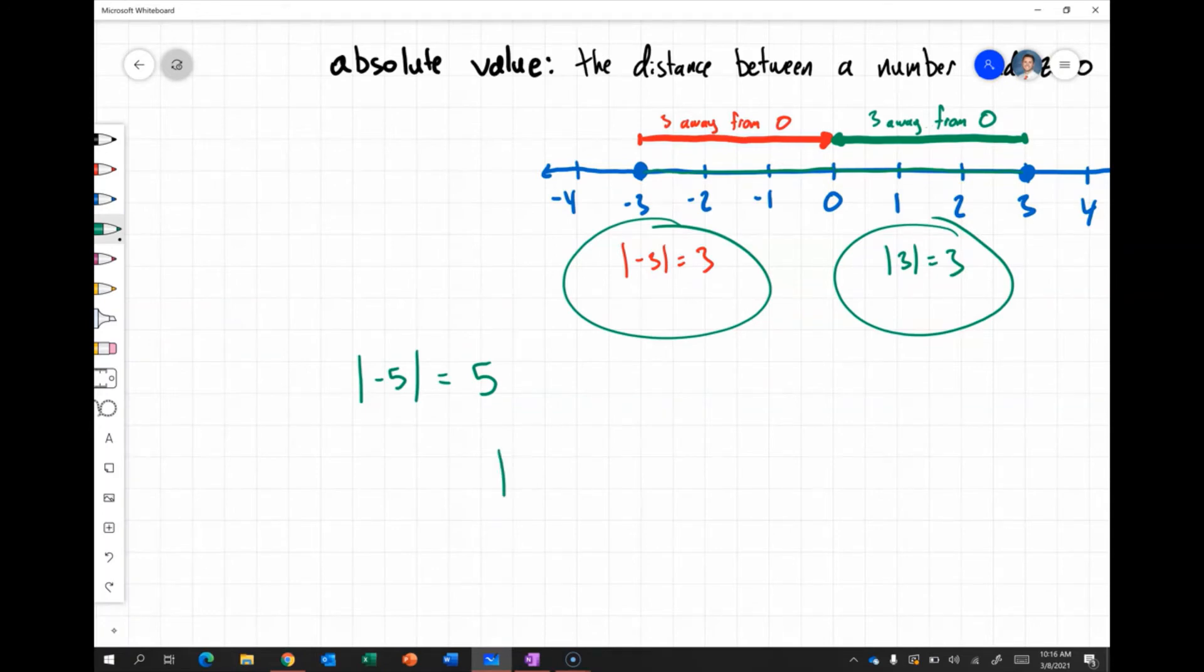So the absolute value of positive seven, or just simply seven, is seven. The absolute value of negative 83 is 83. And this is the absolute value.